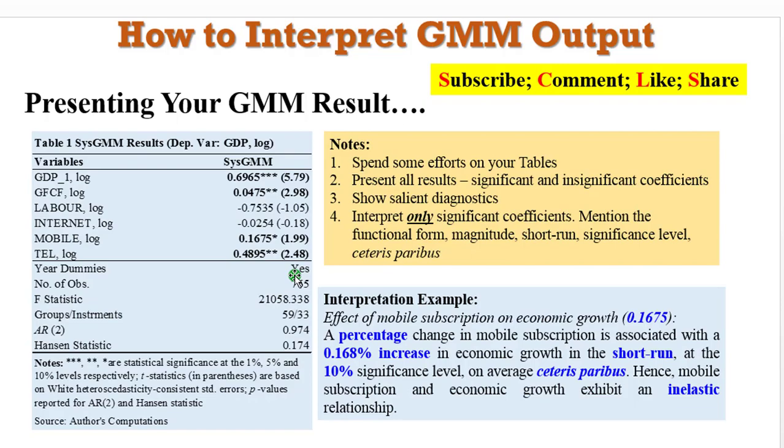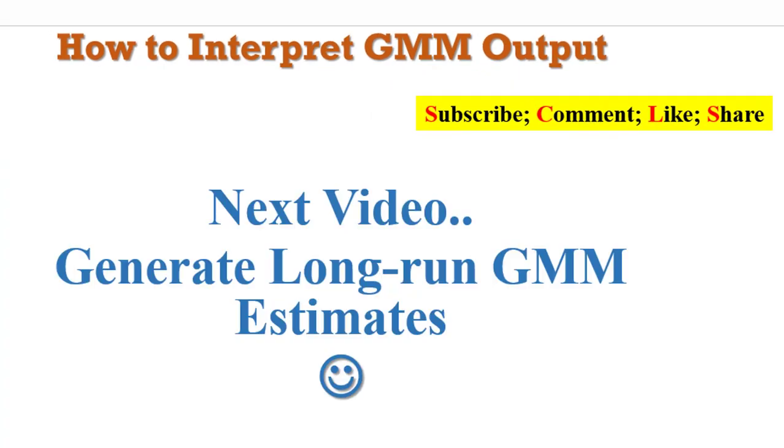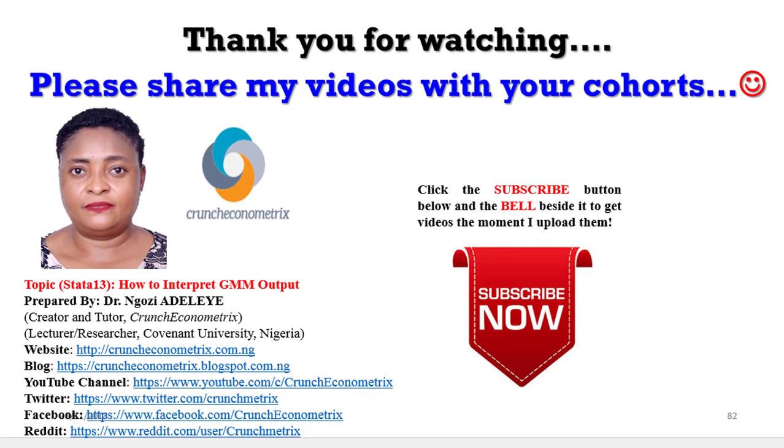So whether you are using Stata or eViews, it doesn't matter. Please present your tables in a very good way. Stay with me, my next video, I will show you how to generate long run GMM estimates, only for the significant short run coefficients. Thank you once again for staying with me. Thank you for sharing my videos. If you have not subscribed to my channel, please do so. Please tell others about Crunch Econometrics. Please follow my Facebook page. Join me on Reddit. And you can always tweet my videos whenever you see them on Twitter. Please don't go away. I'll be right back.